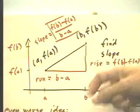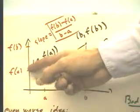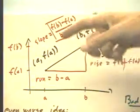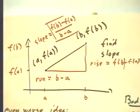Locating the points A and B on the x-axis and F of A and F of B on the y-axis, we usually see that these are the rise and the run. So the slope's going to be F of B minus F of A over B minus A.